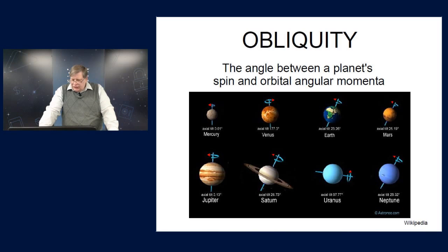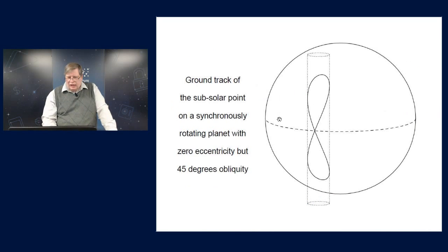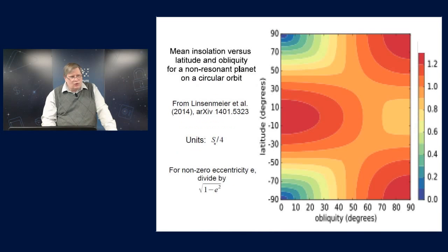But the effect of obliquity on the insolation can be very significant. For example, here's again a non-resonant planet. It's on a circular orbit. This plot is from Lundsen-Meyer et al., and they have a different color scheme. But this shows the situation. For a zero obliquity, the insolation as a function of latitude peaks at the equator and drops off to zero at the poles.